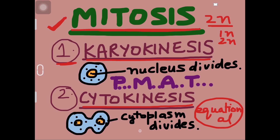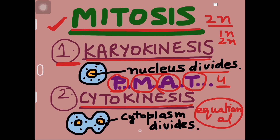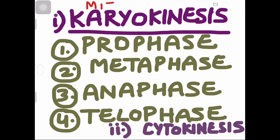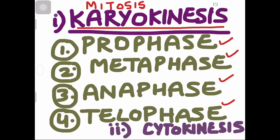The division of the nucleus comes first in the sequence — karyokinesis — where the nucleus divides into two. Karyokinesis is further divisible into four stages: prophase, metaphase, anaphase, and telophase. Cytokinesis, as the name indicates, is the breakdown and division of the cytoplasm, which occurs after nuclear division, giving two daughter cells out of one.